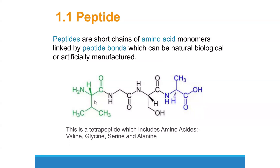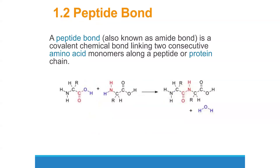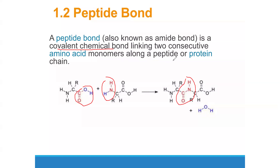A peptide bond is also known as an amide bond or amide linkage. It is the type of bond that links amino acid monomers along a peptide or protein chain. Peptide bonds are formed when the carboxylic group of one amino acid links with the amino group of another amino acid. This is what we call a peptide bond or amide linkage.